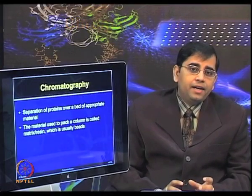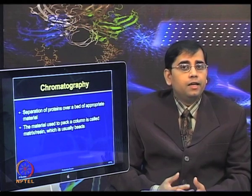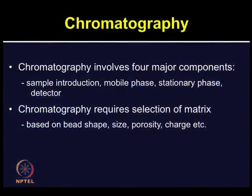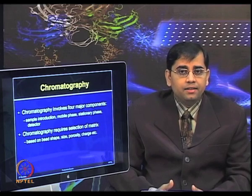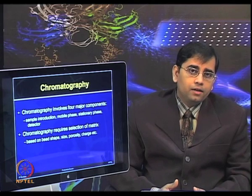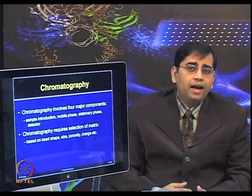The binding and interaction of proteins with the column matrix is an important feature of chromatography. The technique involves four major components: an inlet for sample introduction, the mobile phase, the stationary phase, and a detector. Each type of chromatography requires an educated choice of matrix considering bead shape, length, size and porosity, in addition to functional group type, charge, distribution and density, as well as elution conditions such as pH, ionic strength, and gradient shape.